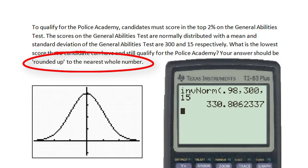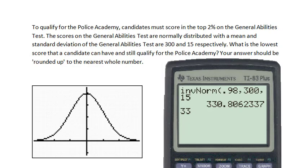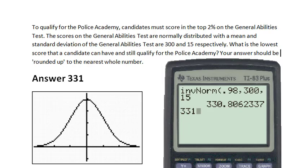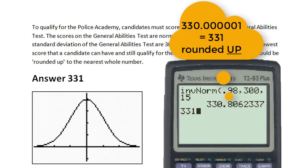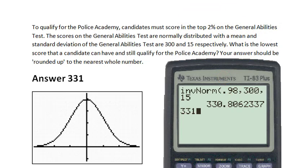In this problem, we are told to round our answer up to the nearest whole number. So our answer will be 331, because rounding up means that 330 followed by any decimal, even a very small decimal, will round up to the next whole number, namely 331.